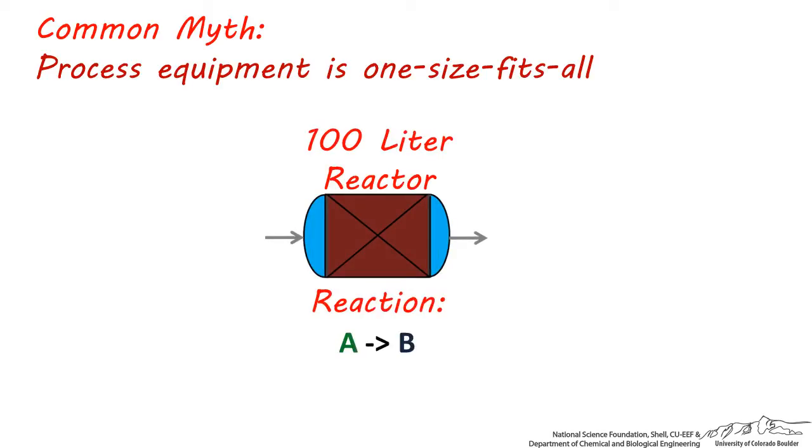Consider a reactor with a volume of 100 liters designed to carry out a simple A goes to B reaction. Some people believe that if a reactor is designed to take A at a flow rate of F sub A, and create B at a flow rate of F sub B, this exact same identically sized 100 liter reactor should have no problem taking 2 times the flow rate F sub A, and making 2 times the flow rate F sub B. This is wrong, because if flow rate is doubled, conversion in the reactor must go down proportionally. There are some exceptions, but in most cases 2 times F sub B will not be formed.